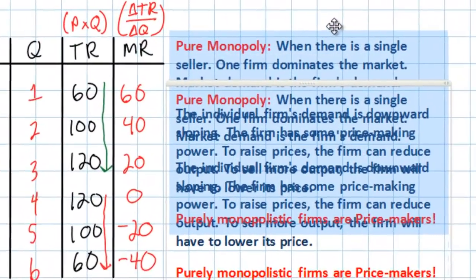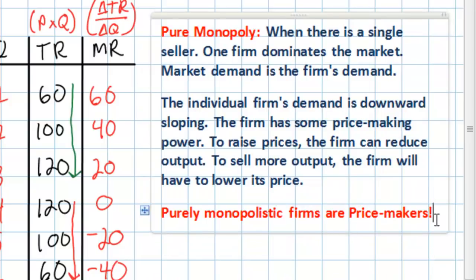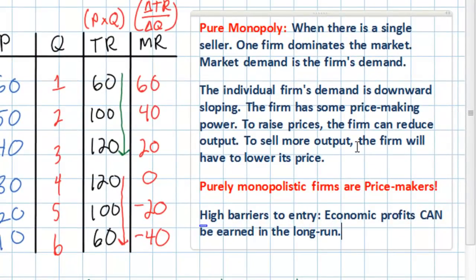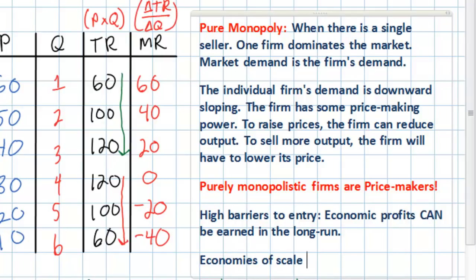In perfect competition, economic profits attract new firms, prices fall, and profits are eliminated in the long run. Will this happen in our monopolistic market? One of the most important characteristics of pure monopoly is that there are high barriers to entry, meaning economic profits can be earned in the long run. In our airplane market, a significant barrier to entry is economies of scale — manufacturers like Boeing or Airbus have achieved economies of scale that new competitors cannot easily replicate. Therefore, profits earned by firms in monopolistic markets are likely to persist in the long run as long as demand remains stable.